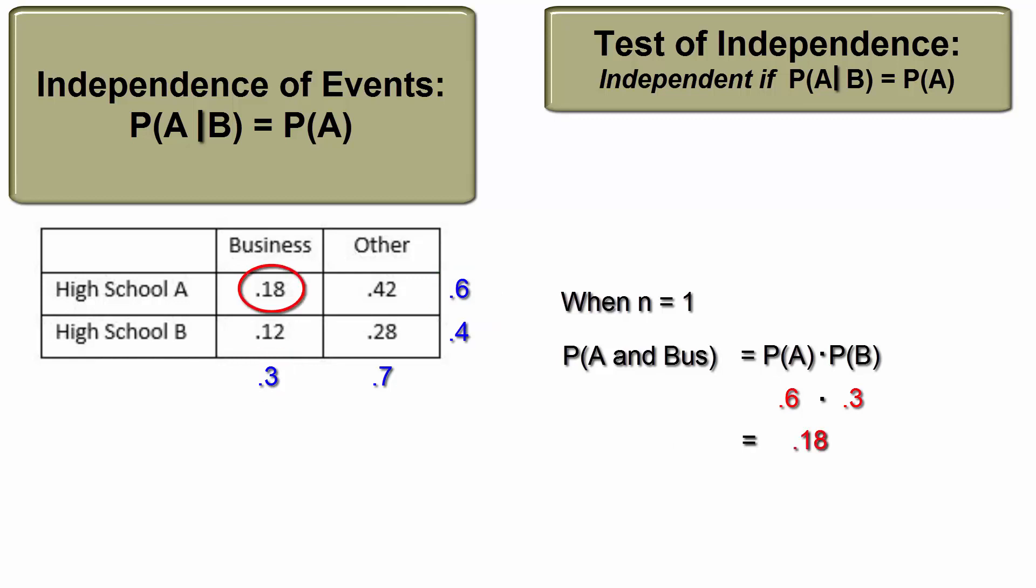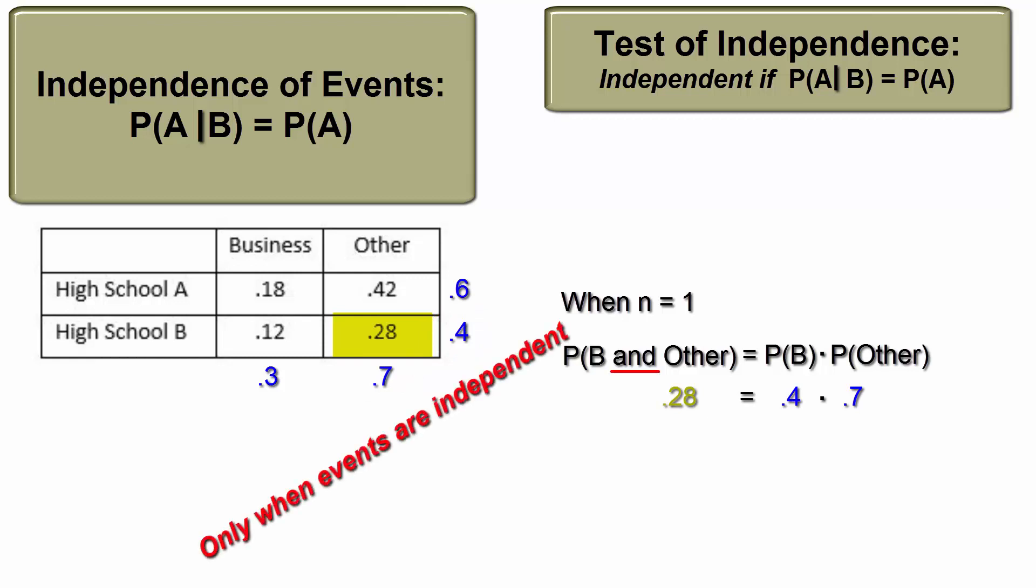This, indeed, is the probability of the intersection. And with independent variables, this works for every cell, including the intersection of school B and those who chose another major. But remember, when n equals 1, the conjunction AND always implies intersection. Only when you know that the events are independent can you trust that multiplying probability A times the probability B will yield the intersection.